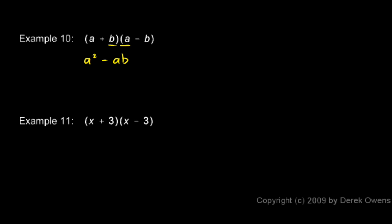And then the inner terms, b and a, give us a plus ba, or I'll write that as a plus ab. And then the last terms, b and minus b, give us a minus b squared. And you can see that the minus ab and the plus ab cancel each other out, and we're left with a squared minus b squared.